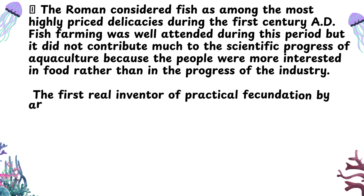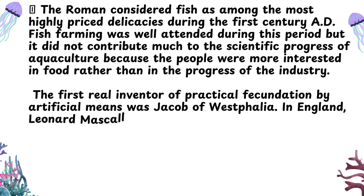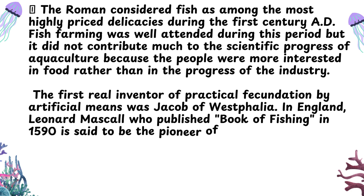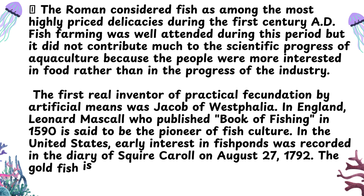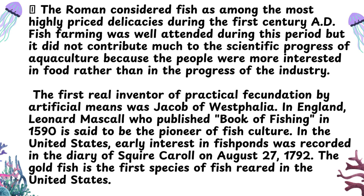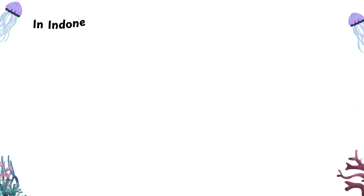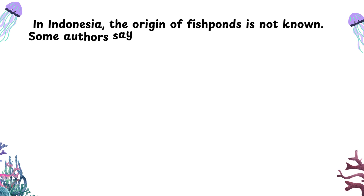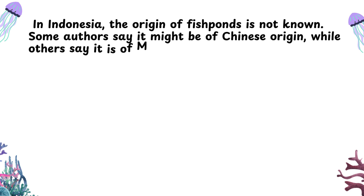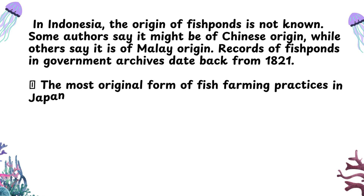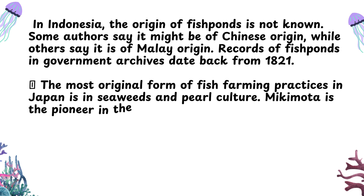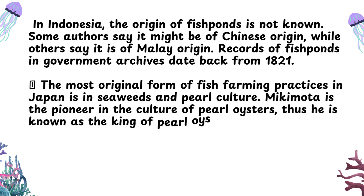The first real inventor of practical fecundation by artificial means was Jacob of Westphalia. In England, Leonard Maskell, who published Book of Fishing in 1590, is said to be the pioneer of fish culture. In the United States, early interest in fish ponds was recorded in the diary of Squire Carroll on August 27, 1792. The goldfish is the first species of fish reared in the United States. In Indonesia, the origin of fish ponds is not known — some authors say it might be of Chinese origin, while others say it is of Malay origin. Records of fish ponds in government archives date back from 1821. The most original form of fish farming practices in Japan is in seaweeds and pearl culture. Mikimoto is the pioneer in the culture of pearl oysters, thus he is known as the king of pearl oyster culture.